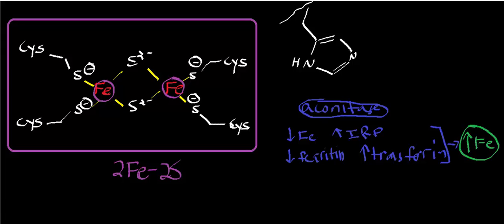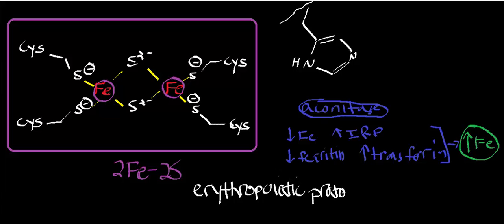If you have a deficiency of this enzyme, it would be termed erythropoietic protoporphyria. As we know, deficiencies of enzymes in heme synthesis are called porphyrias. So a deficiency of ferrochelatase gives erythropoietic protoporphyria, which ultimately means less heme synthesis for the cell.